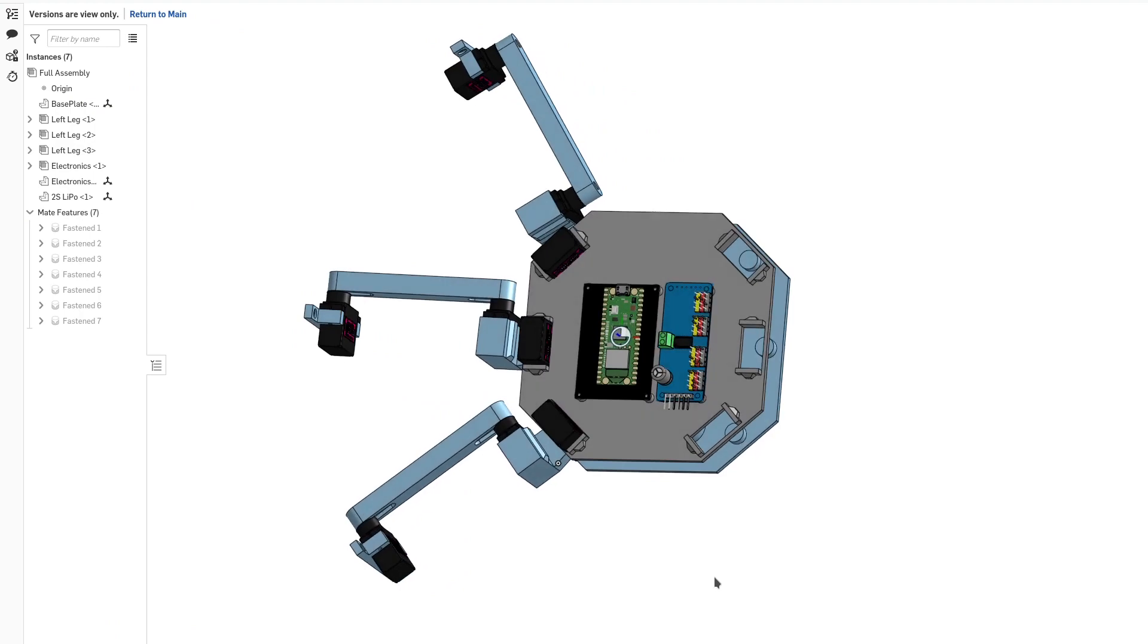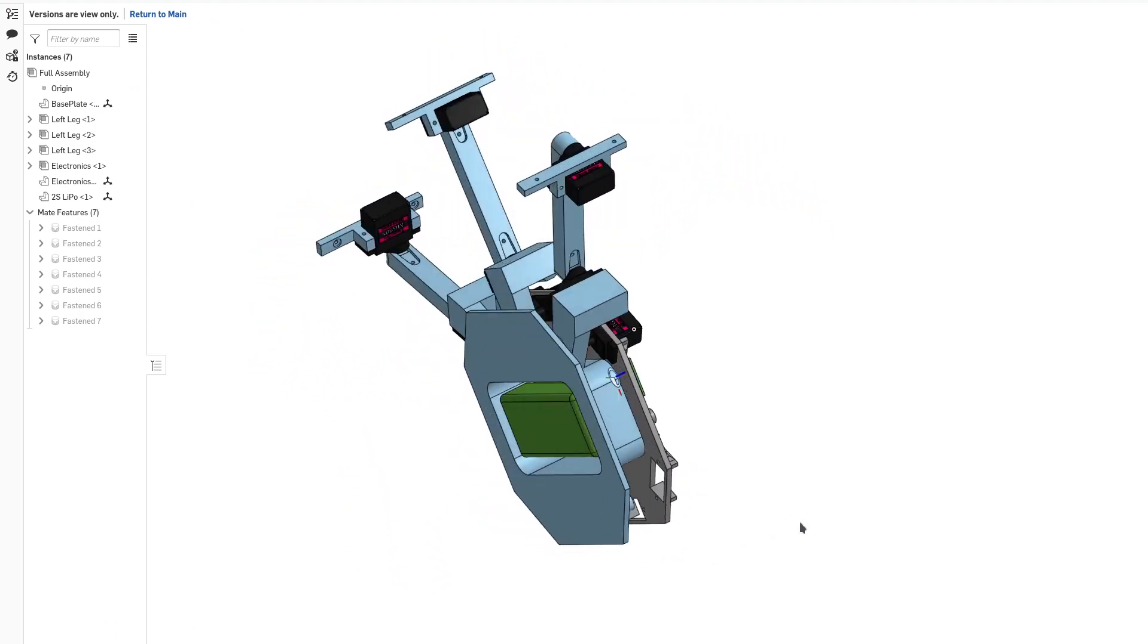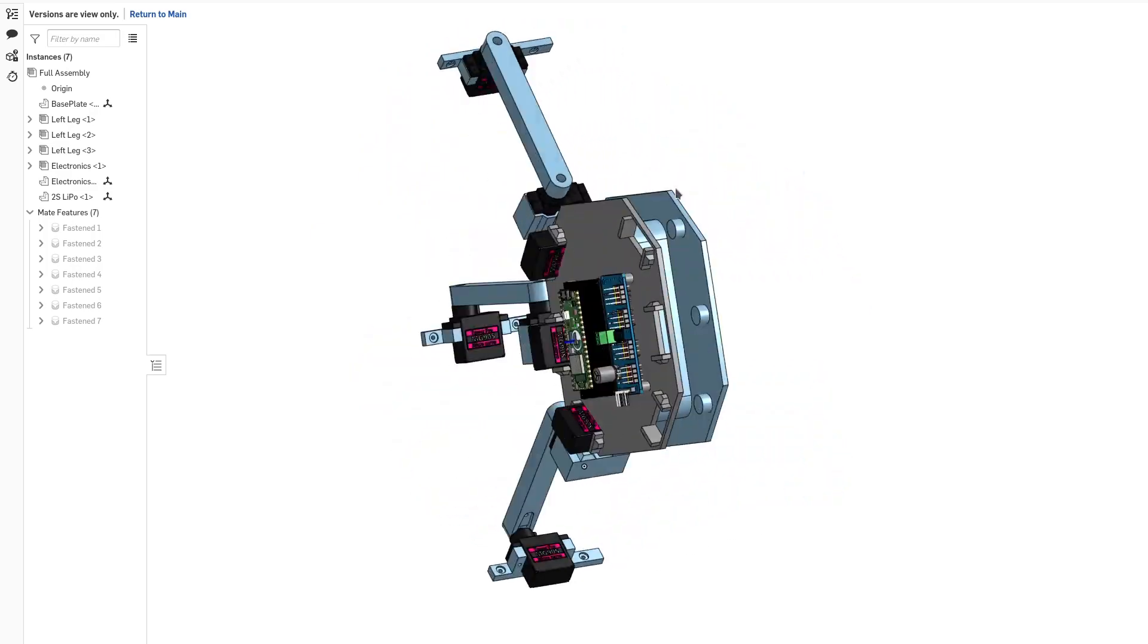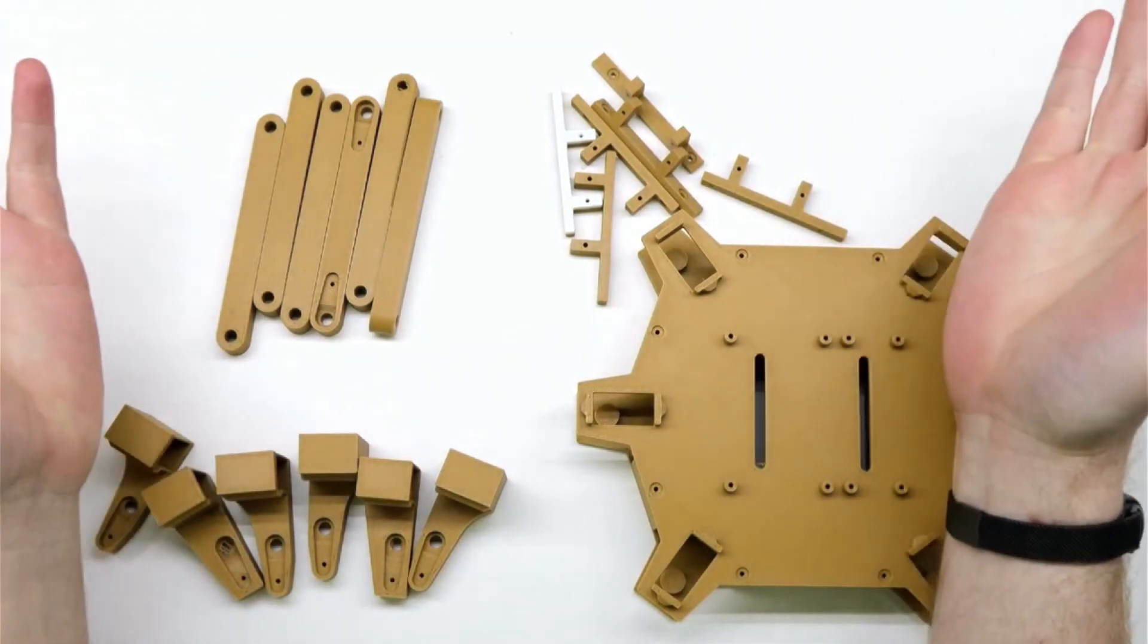I'm going to start by making some quick sketches in Onshape. This is going to help me get a basic idea of how it's all going to look and how all the parts are going to fit together. When I have something worth testing, I can print it out.